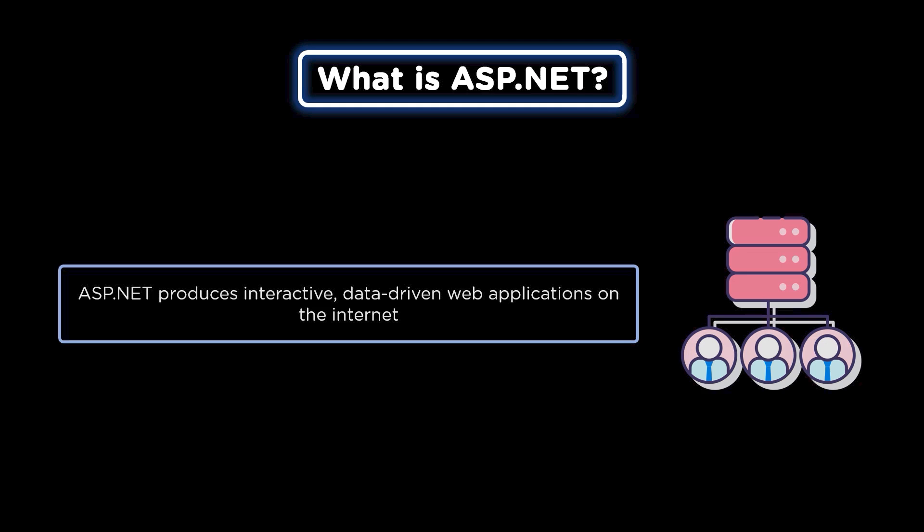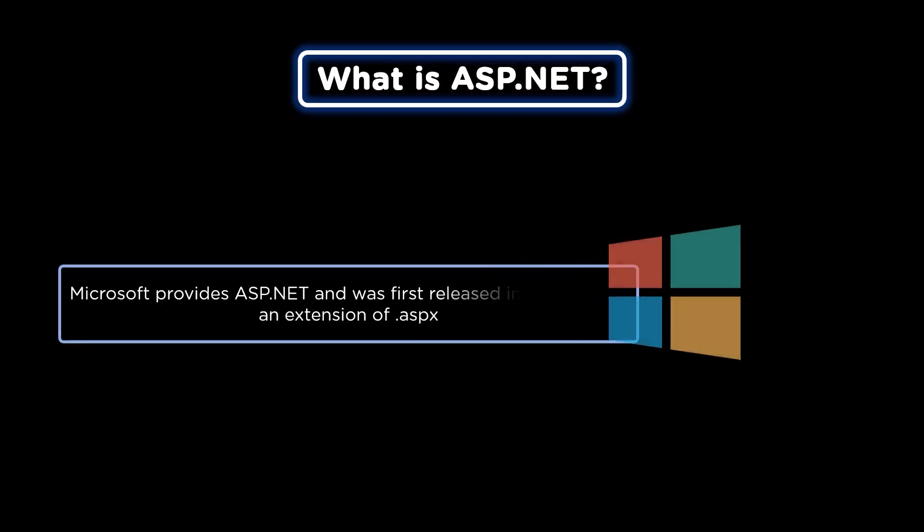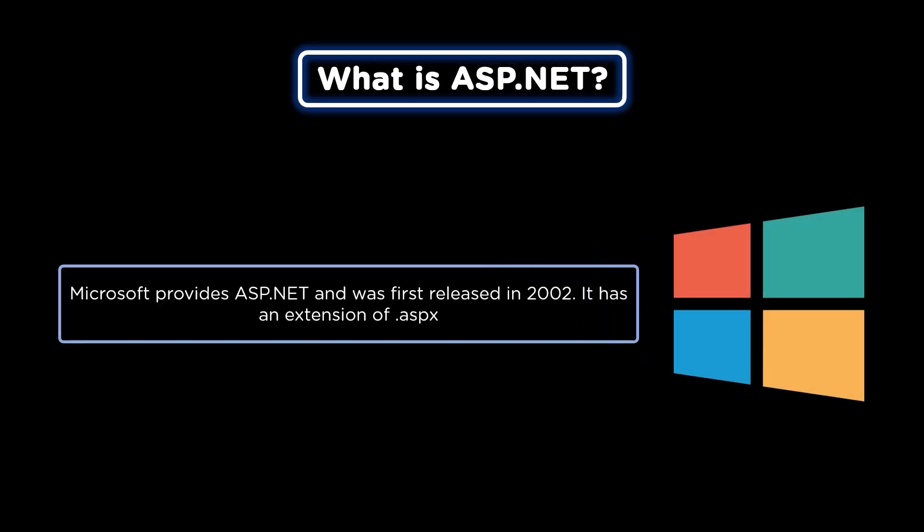It works on HTTP protocols and uses HTTP commands to set communication between the server and the browser. The codes can be written in many different languages like C#, Visual Studio, and JavaScript. The latest version of ASP.NET is the Active Server web pages which Microsoft developed to build websites. It was released in 2002 and had an extension of .aspx.